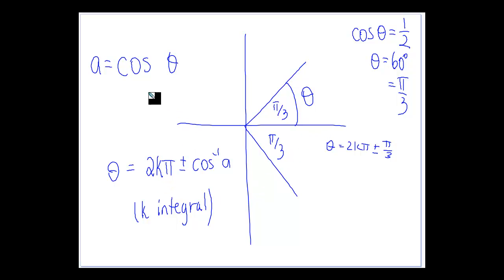So if you've got a equals cos θ, then θ as a general solution would be 2kπ plus or minus the inverse cos of a, the same as we did there.